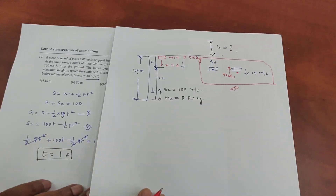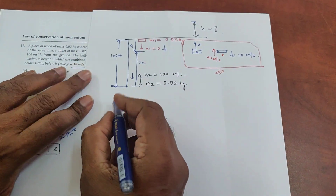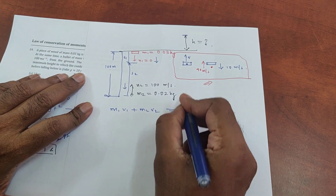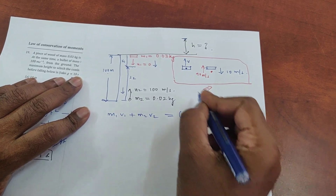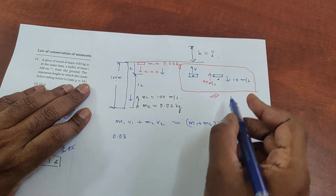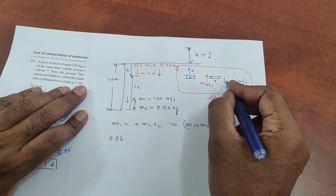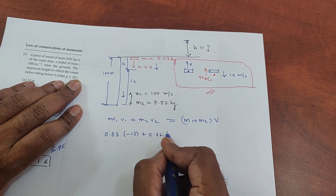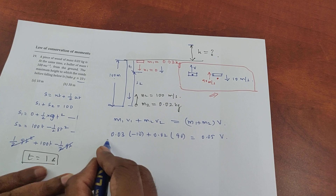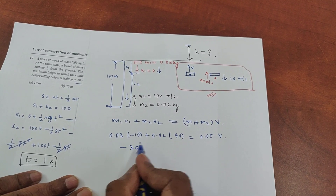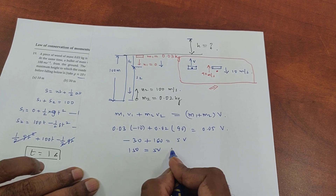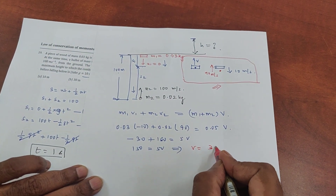Applying conservation of momentum: m1·v1 plus m2·v2 equals (m1 plus m2) into v. So 0.03 times (minus 10) plus 0.02 times 90 equals 0.05 times v. Multiplying through by 100: 3 times (minus 10) plus 2 times 90 equals 5 times v, giving minus 30 plus 180 equals 5v, so 150 equals 5v, which gives v equals 30 meters per second upward.